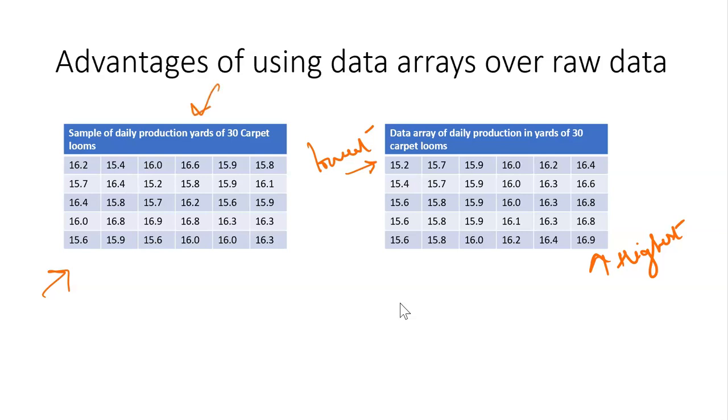By the way, if the data is not in order, not arranged, then we call it raw data. Whereas if it is arranged, which we see here, be it in ascending order or descending order, then it is called a data array.